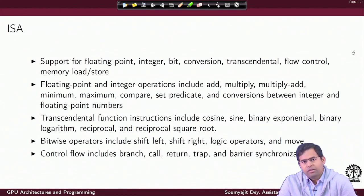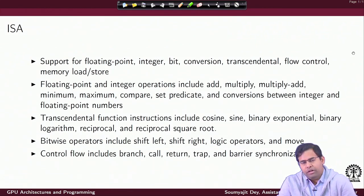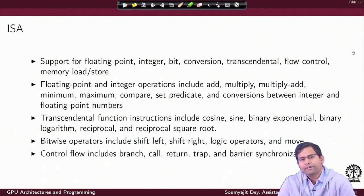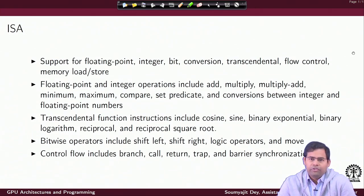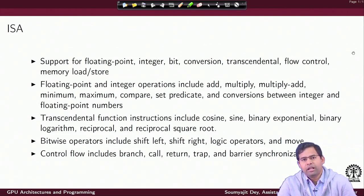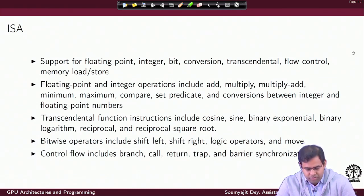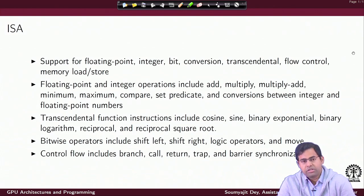Inside the GPU, apart from the scalar processors, we also have special function units which take care of executing the transcendental functions — functions for which you do not have a nice closed form, but there are standard numerical algorithms which implement their approximate versions. For example, cosine, sine, binary exponential, binary logarithm. As we know, the exact values require computing an infinite series of terms, but inside a standard digital system they are implemented via a numerical algorithm doing an approximate computation, good enough in terms of the number of bits provided to represent the value. So you have transcendental function instructions for all trigonometric functions, binary exponential, binary logarithm, computing reciprocal, and reciprocal square root.